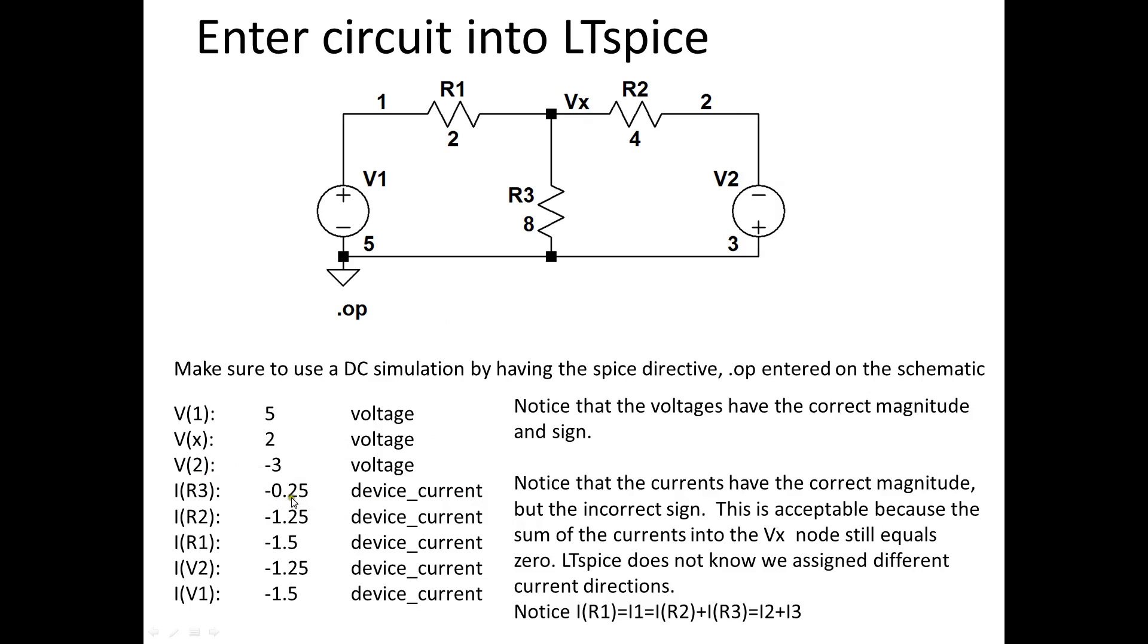Something interesting is that the currents are all negative. And the reason why is that in LTSpice, it has an internal direction that it thinks the current or the voltage drop should occur across. And you can't tell what it is by looking on the schematic.